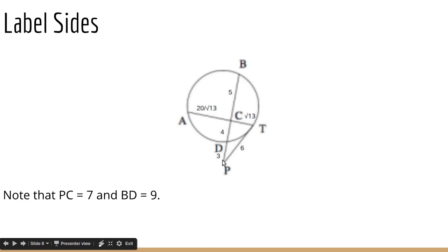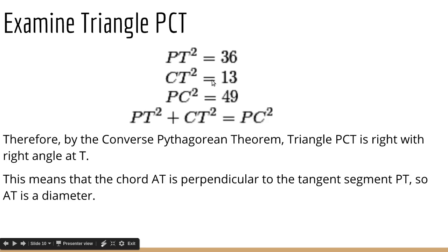The answer to that is we use the Converse Pythagorean theorem. So what we do is that we look at the squares of each of the sides. So PT squared is 36. CT is square root 13, so that squared is 13. PC is 7, so that squared is 49. And then I noticed that PT squared plus CT squared equals PC squared. And that only happens in right triangles. So that means PC has to be a hypotenuse. So the angle opposite that, which is angle CTP, is a right angle.